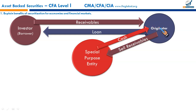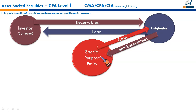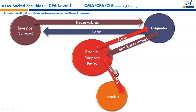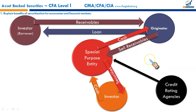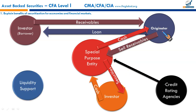The special purpose entity pays cash to the originator, removing these receivables from the originator's balance sheet. The originator continues to receive interest and principal payments from the borrower, deducts its servicing cost, and passes the cash to the special purpose entity. The SPE then issues securities backed by those transferred assets — called asset-backed securities. These may be rated by credit rating agencies, sometimes achieving a higher rating than the original issuing company, providing much-needed liquidity.